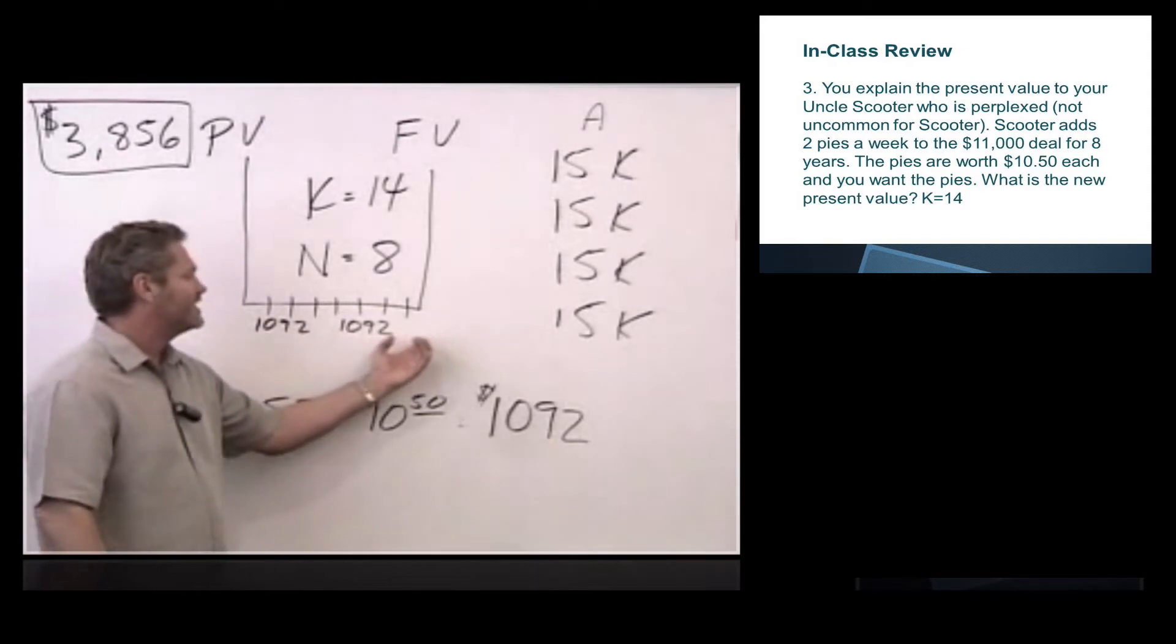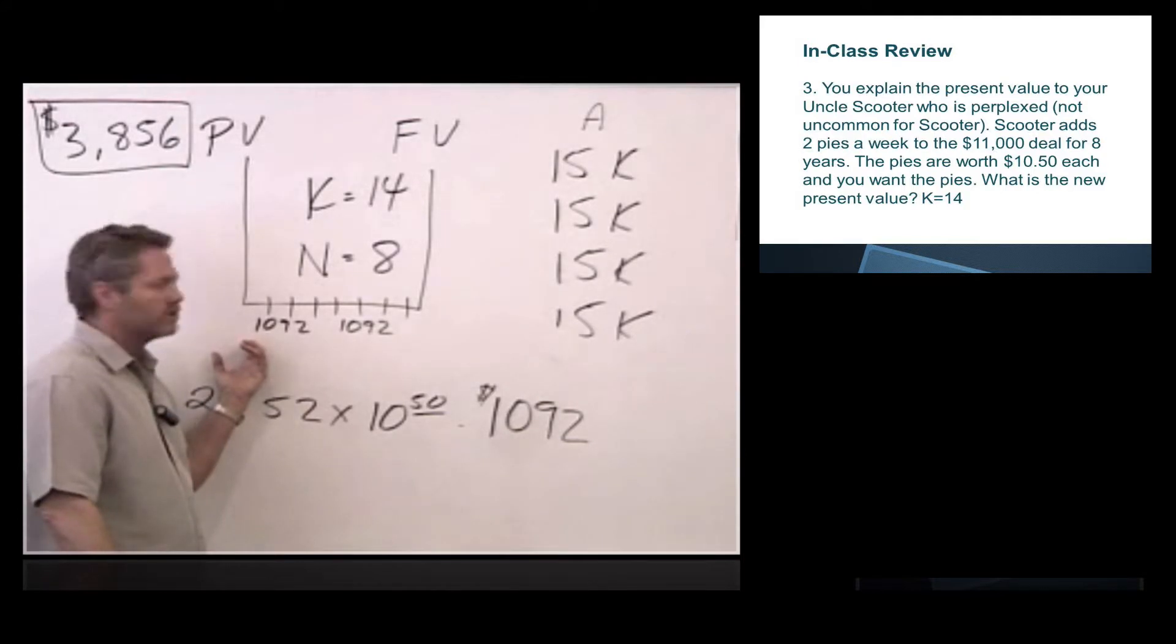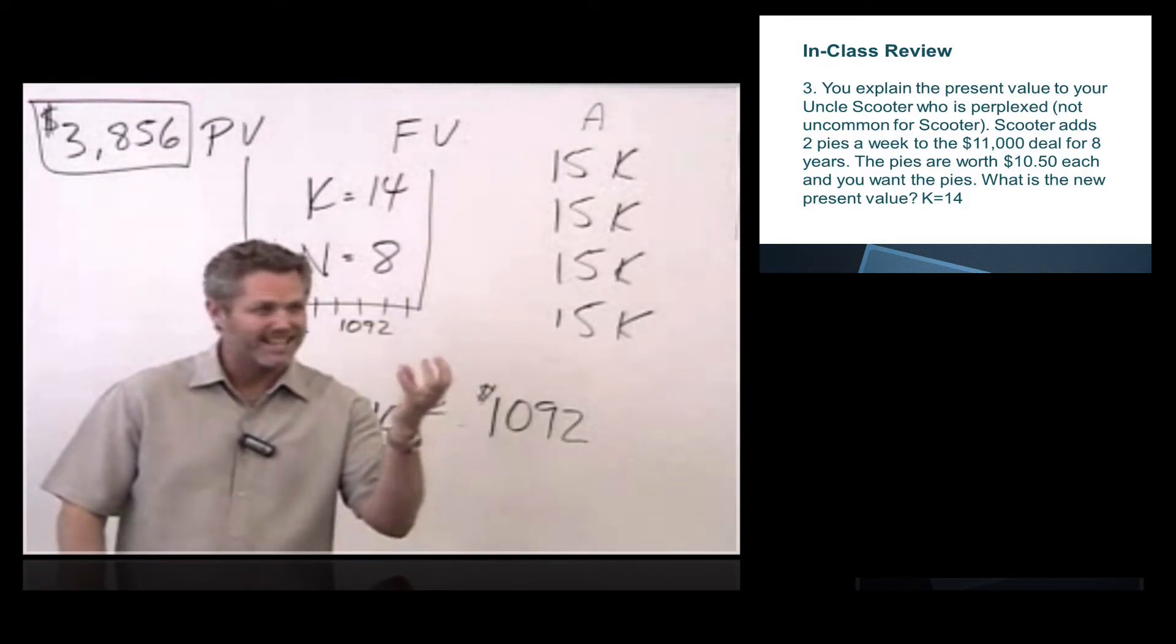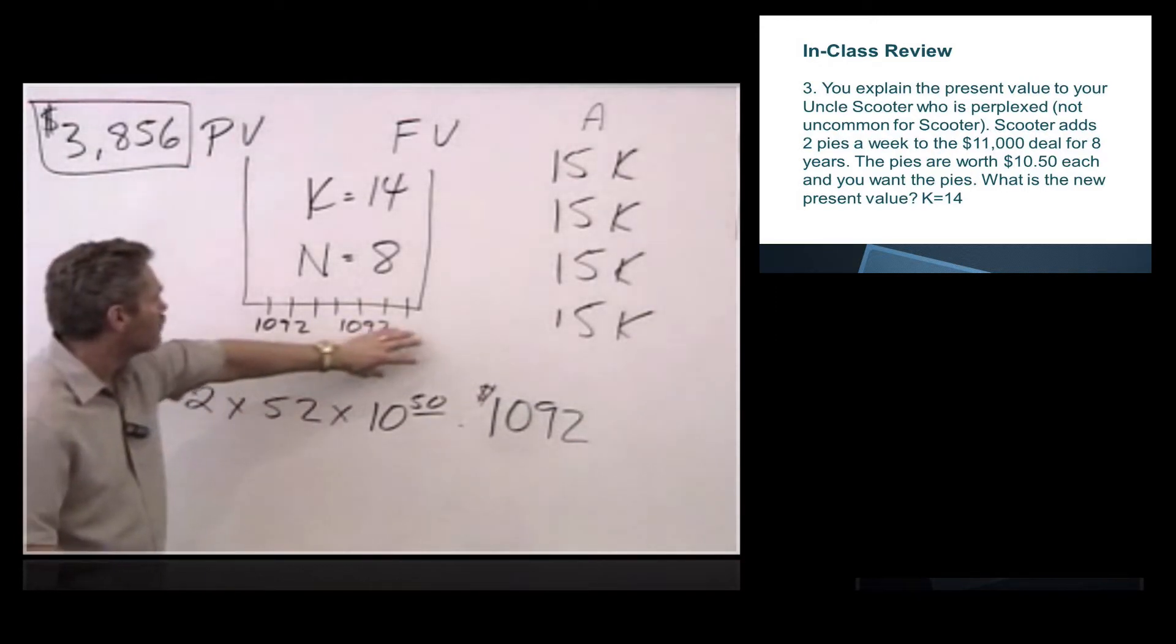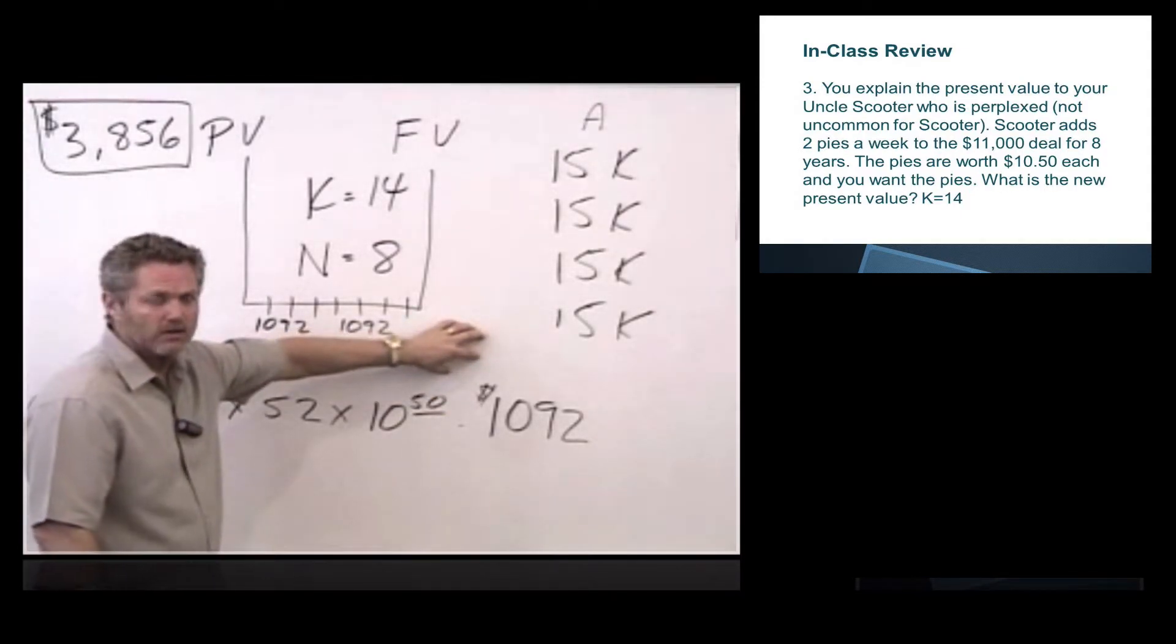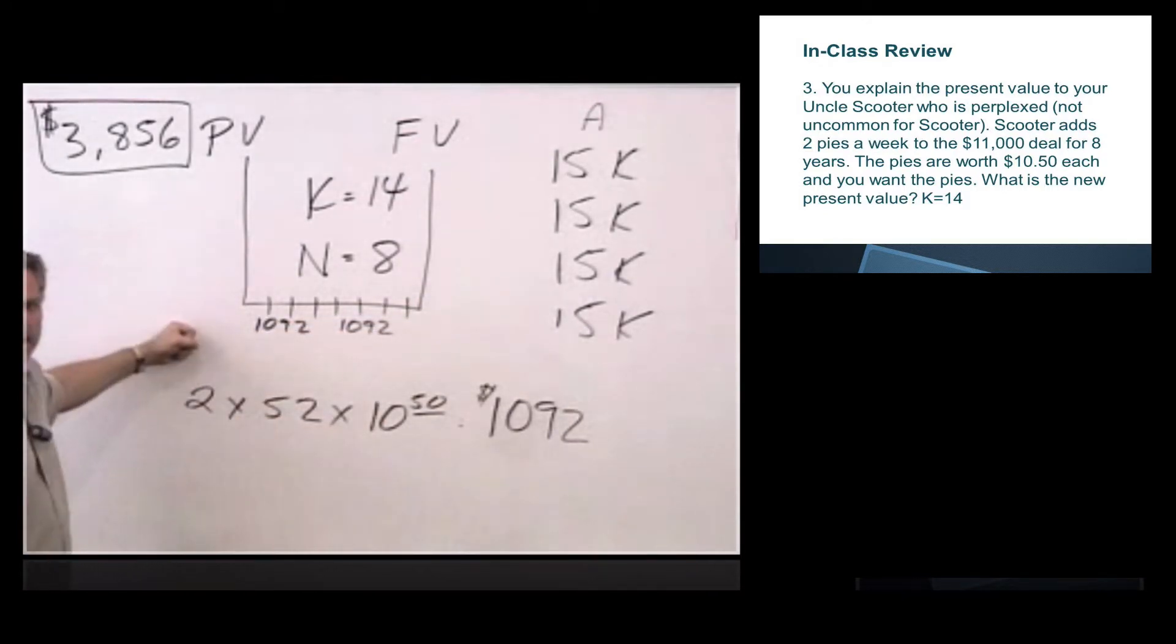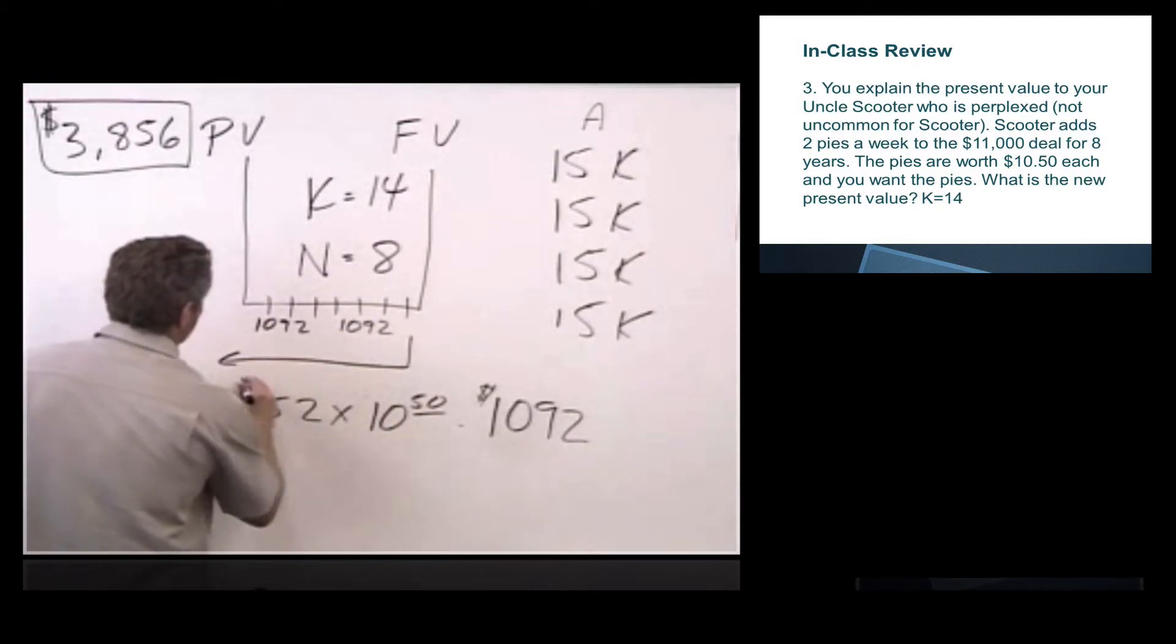Most of the time you're going to end up discounting back to today when you're looking at various investment decisions. When does Scooter want his $15,000? He wants his $15,000 today. I know what $15,000 today is worth. It's worth $15,000. I don't know what the pies are worth. If I take the pies out in the future, then I have this value eight years from now, but that doesn't give me that much information because I'm making my decision today.